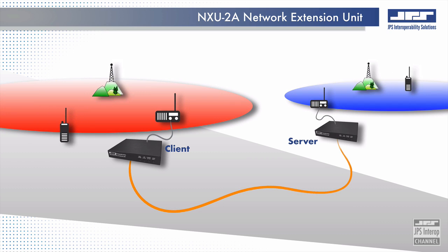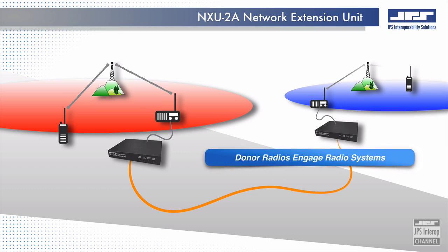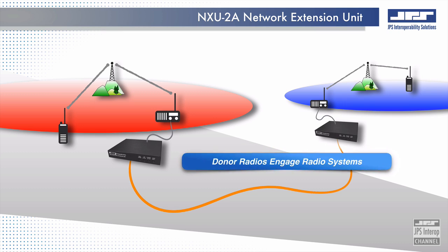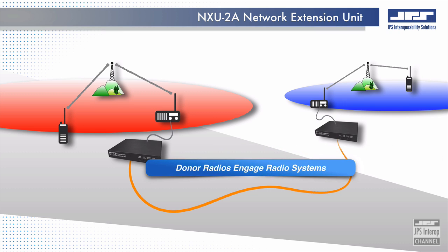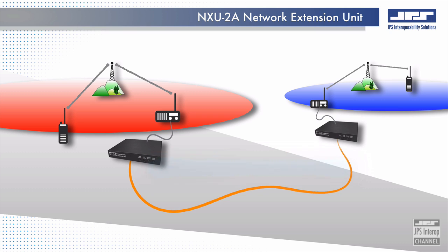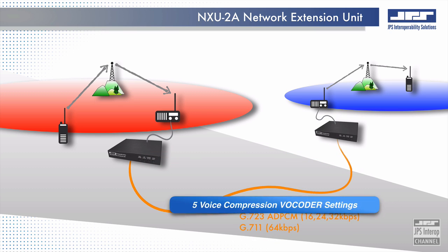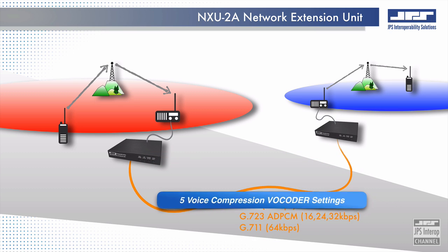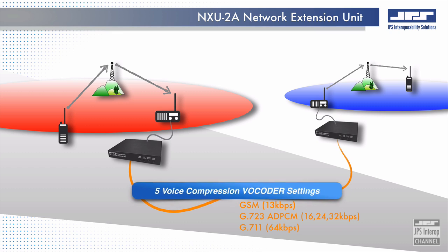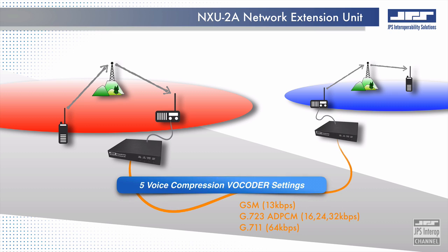When complemented with donor radios, the NXU2A modules can share radio communications anywhere a digital network exists. Five user-selectable voice compression vocoders allow the conservation of network bandwidth while yielding high-quality audio fidelity, whether the ROIP stream contains pure voice communications or intrinsic in-band signaling.